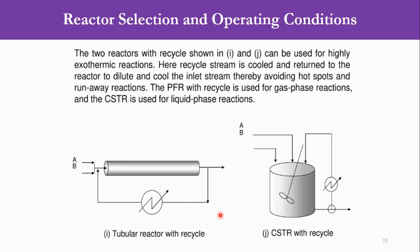Then you can see these two are the reactors which include the recycling phenomena. Both reactants are fed to the tubular reactor. The product is recycled. Obviously it is cooled and then recycled. These two reactors with recycle can be used for highly exothermic reactions. Here recycle stream is cooled and returned to the reactor to dilute and cool the inlet stream, thus avoiding the hot spots and runaway reactions. This one could be used for gas phase reactions and this one for the liquid phase reactions. The same phenomena is going there that the product is cooled and then is fed to the system.